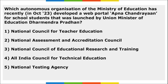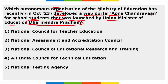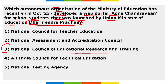Next, which autonomous organization of the Ministry of Education recently developed a web portal — Apna Chandrayaan — for school students, launched by Union Minister of Education Dharmendra Pradhan? It is NCERT — National Council of Educational Research and Training — which developed the Apna Chandrayaan web portal for school-going students.